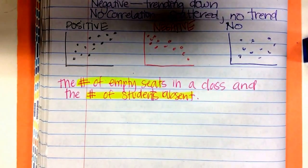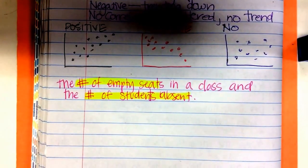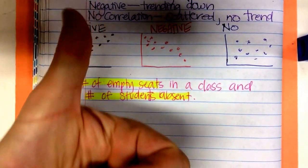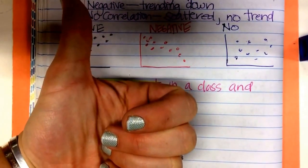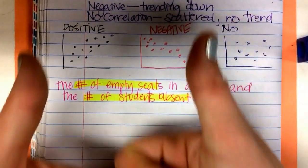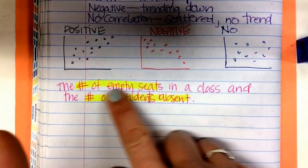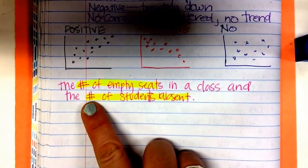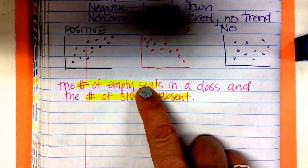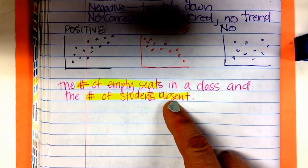If there are two things we're measuring, two variables, let's talk about them. Let's talk in terms of up and down, right? As the number of empty seats increases, I use thumbs up, right? As the number of empty seats increases, tell me about the number of students absent. Do the number of students absent increase or decrease? If there are two empty seats, how many students are absent? Two. If there are three empty seats, how many students are absent? If there are five empty seats, how many students are absent? Five.